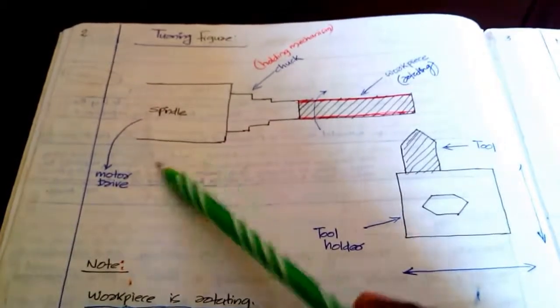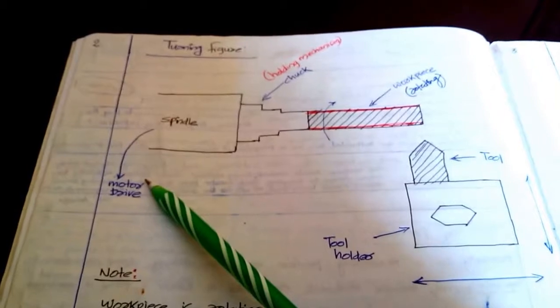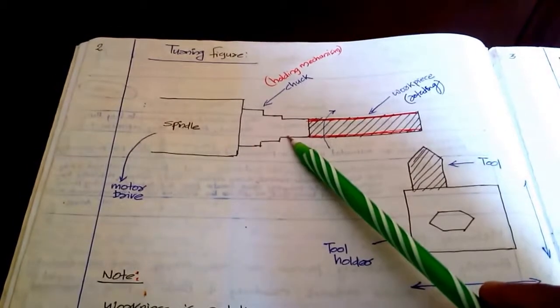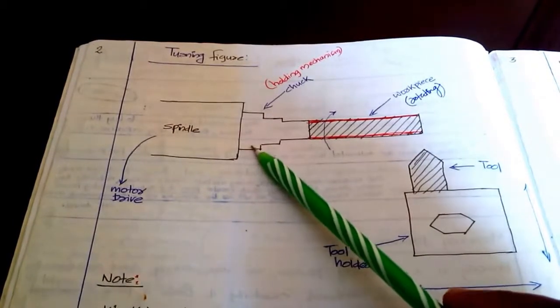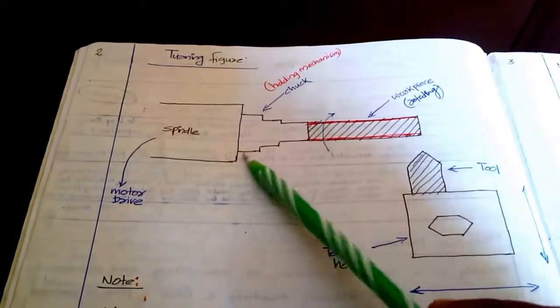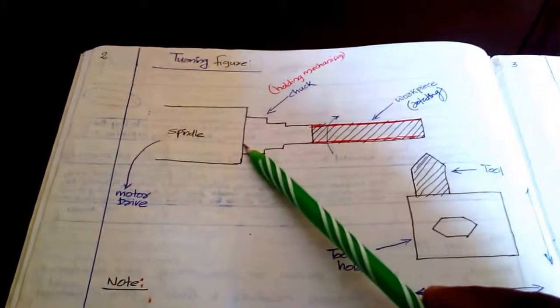See, this is the spindle. Here a drive is there, a motor drive is there, and this is connected by a particular mechanism, a holding mechanism called chuck. So this is the chuck, so drive is connected to the chuck.